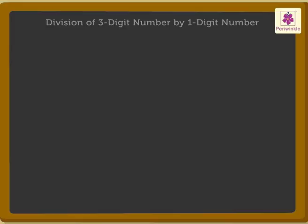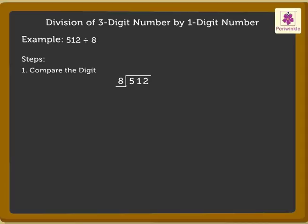Divide 512 by 8. Children, there are a few steps to simple division. Let us see these steps while finding the quotient for 512 divided by 8. Firstly, compare the digits.